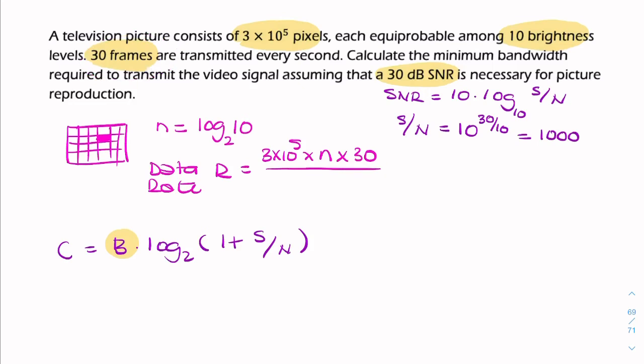So data rate is the amount of data divided by the time. So that's just one second because we're looking at per second. So this is your frame rate, 30 frames per second. n is your bits depth. And 3 times 10 to the power 5, that is the number of pixels per image.